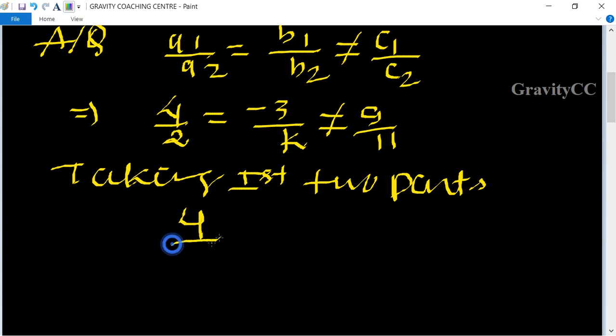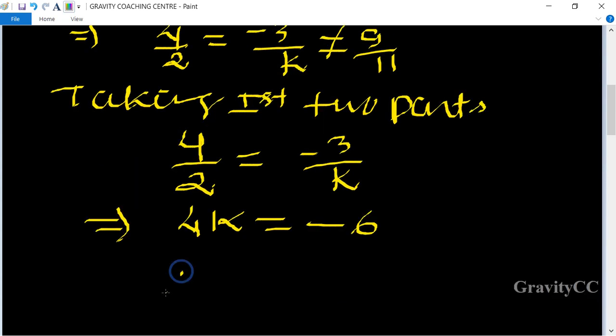Taking first two parts: 4 upon 2 equals minus 3 upon k. After cross multiplication we get 4k equal to minus 6. So therefore k equal to minus 6 upon 4, and both numbers are cancelled by dividing by 2, so it is equal to minus 3 upon 2, which is the required answer.